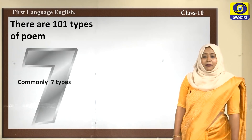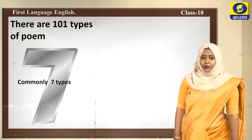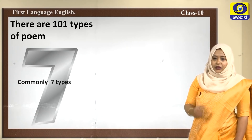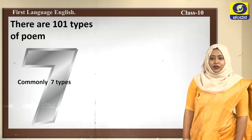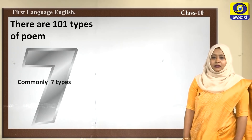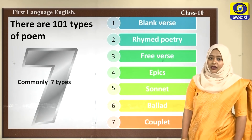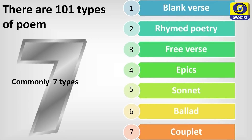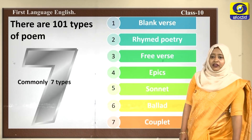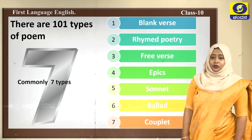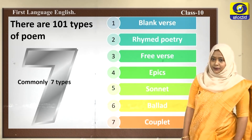There are about 101 types of poems, but we see seven common types of poems. They are blank verse, rhymed poetry, free verse, epics, sonnet, ballad, and couplet. This is a list of seven regularly used poem types which we need to understand.